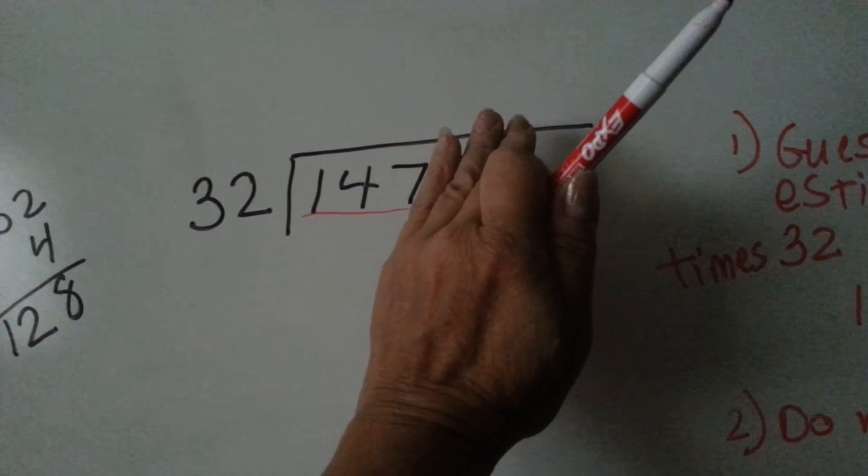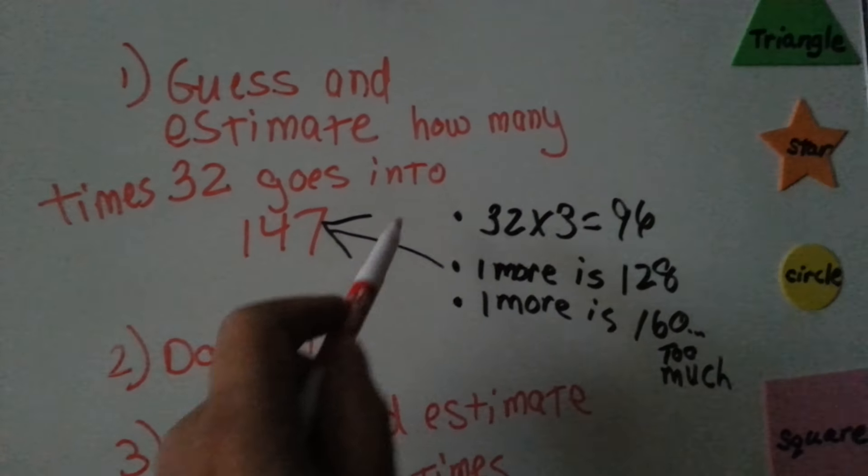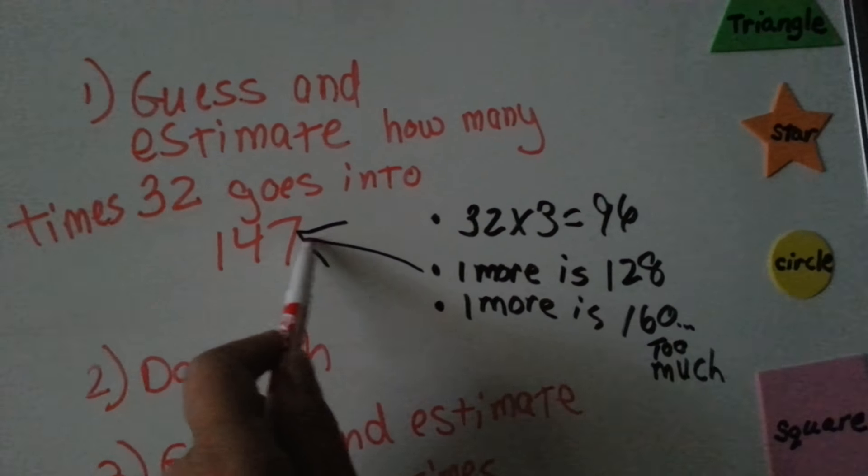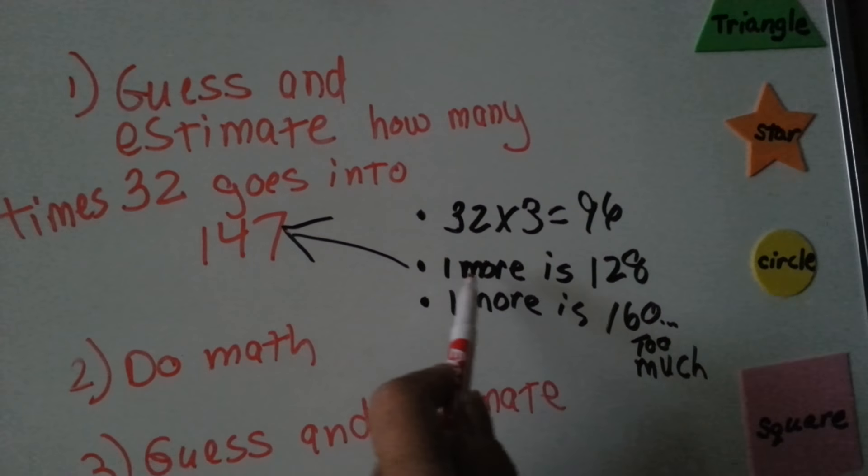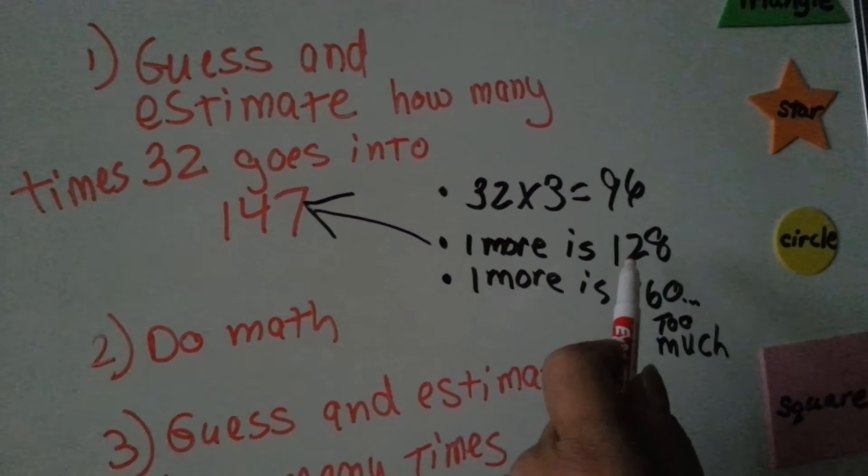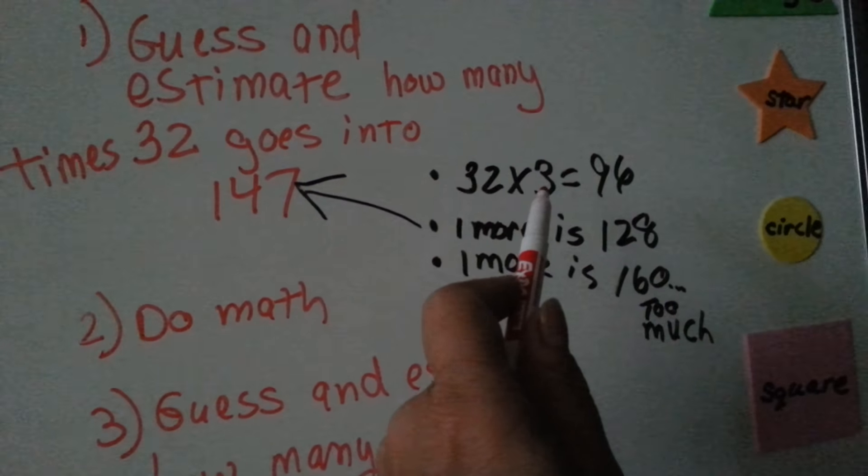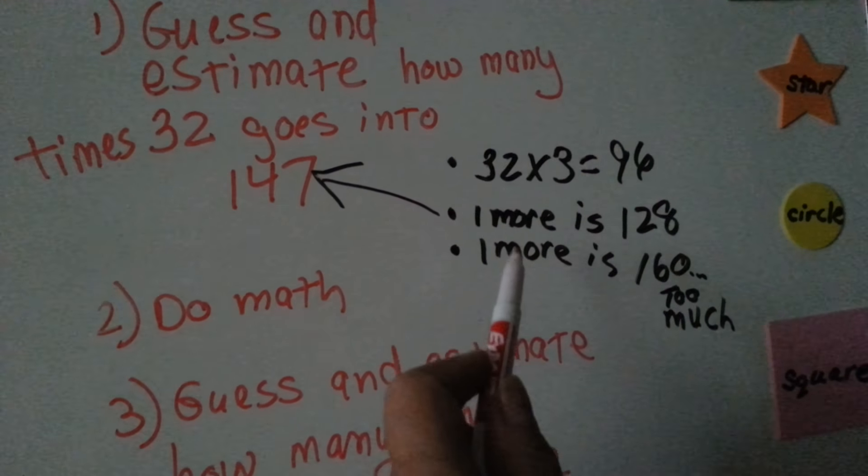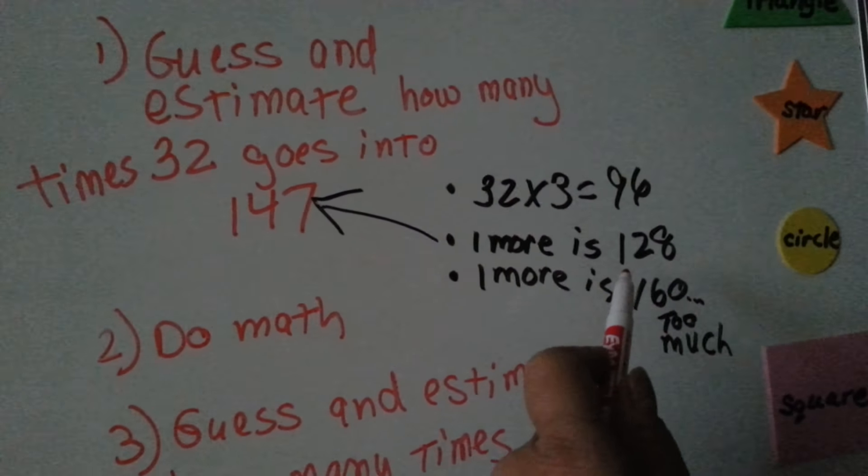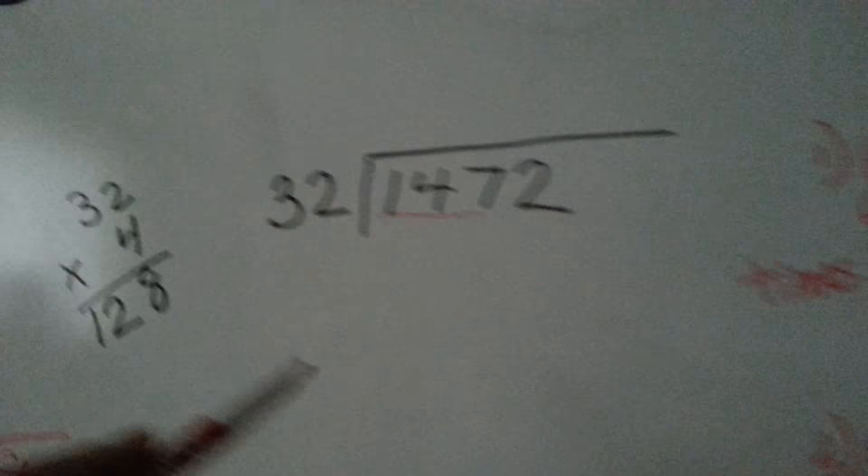What we do is we guess, guesstimate. We know if we do 32 times 3 that it'll come up as 96, but we can fit another 32 in there. If we add another 32 to it, so it's 32 times 4, we'd get 128 that would fit in there. If we try to add one more, that'd be 32 times 5, we get 160 and that's too much. So we're going to have to go back to the 128, which is 32 times 4.